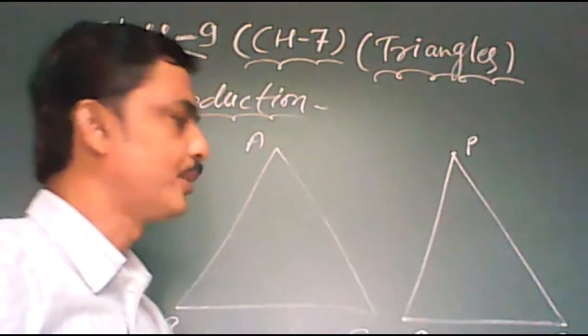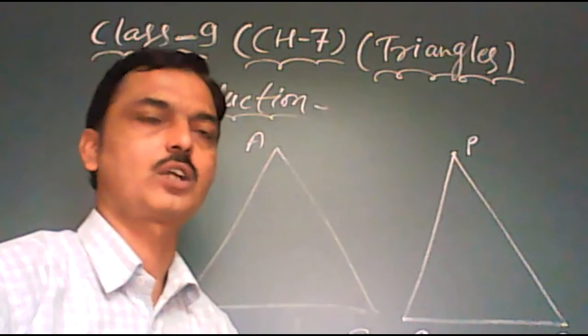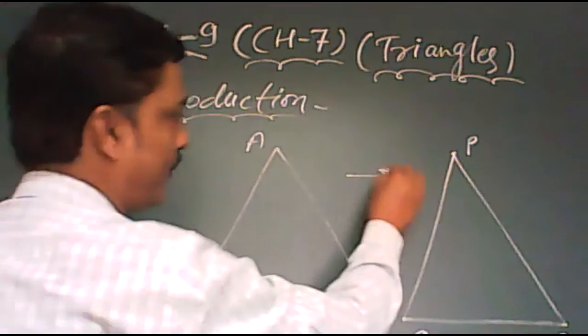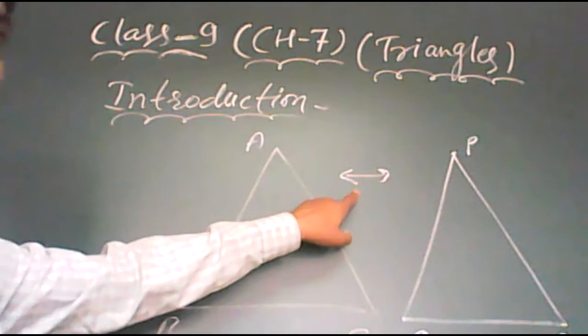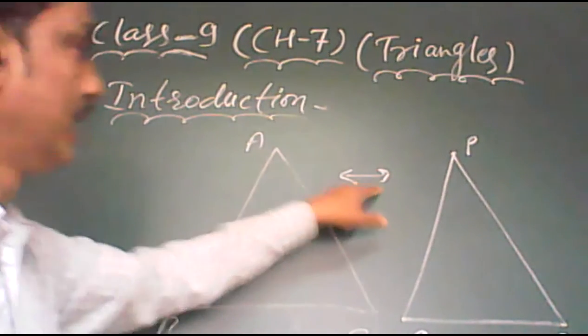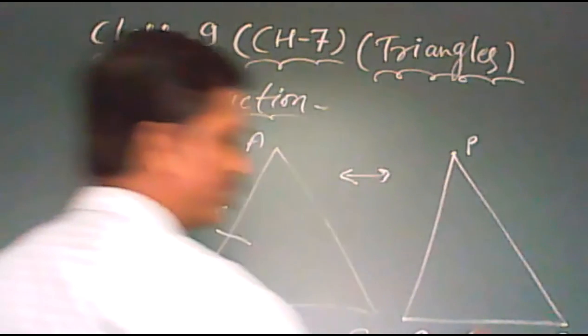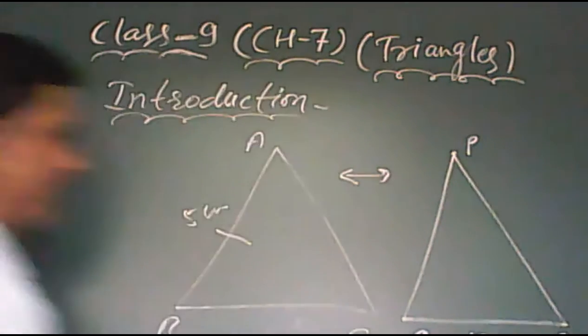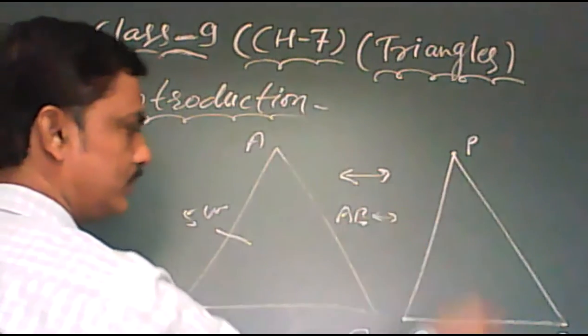Triangle ABC and triangle PQR. And then what is the meaning of corresponding parts? The symbol we use here for corresponding, this is the symbol for corresponding part. If side AB is 5cm and QR is also 5cm, it means AB corresponding to QR.